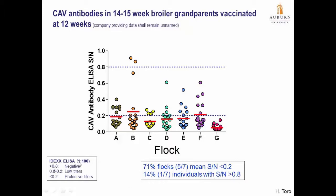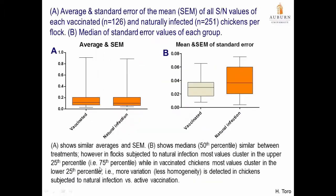In this case we diluted the sample from 1 to 100. But if you compare using the average and standard error of the mean between the vaccinated birds and the natural infection group, you would see no difference. All values of vaccinated and naturally infected flocks overlap in terms of average and standard error. To really find the difference in homogeneity, looking at the standard error of each flock reveals that vaccinated birds were more homogeneously positive for CAB antibodies, while naturally infected birds were not.